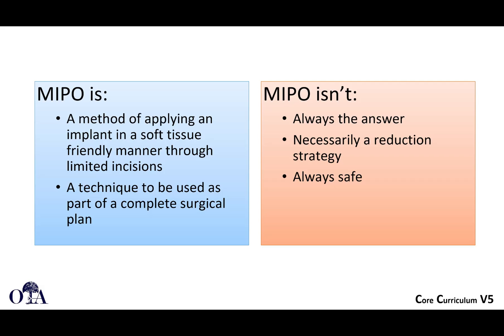MIPO is a method of applying an implant in a soft tissue friendly manner through limited incisions. It is a technique that can be used as part of a complete surgical plan — but it's not always the answer. It's not something you always do, it's not necessarily a reduction strategy in every case, and it's not always safe.